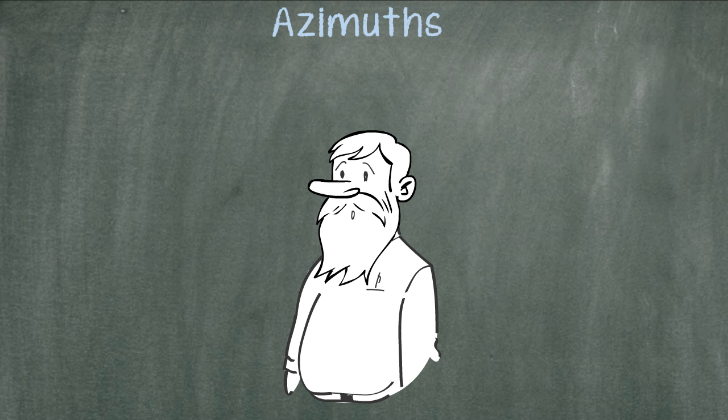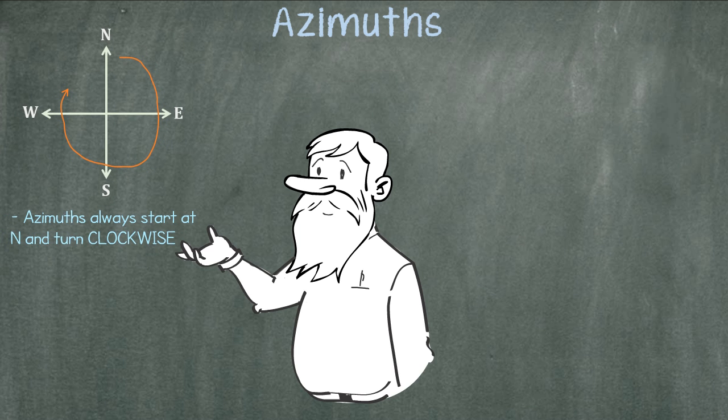There are three basic rules for azimuths. The first rule is that azimuths will always start at north and then turn clockwise. The second item is that azimuth angles will always be between 0 and 360 degrees.